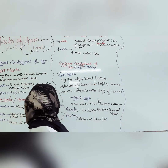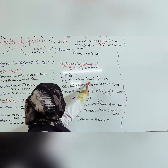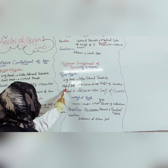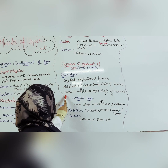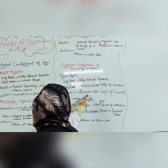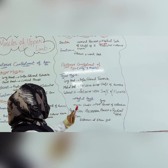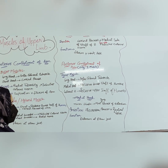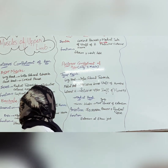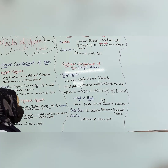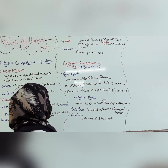Now I will explain the posterior compartment of the arm. The only muscle present is the triceps. The long head originates from the infraglenoid tubercle. The medial head originates from the posterior lower shaft of the humerus, and the lateral head from the posterior upper shaft of the humerus. Its insertion is the olecranon process, supplied by the radial nerve. Its function is extension at the elbow joint.